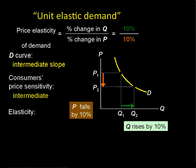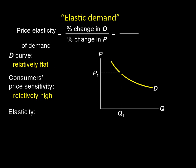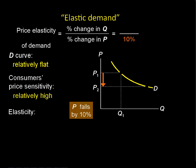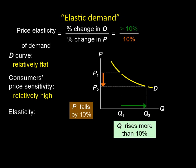Next is unitary elastic demand: price goes down by 10% and we get a 10% rise in quantity. When these two are equal you get one, so it's unitary elastic. This is important to think about — if price goes up, we see an equal percentage fall in quantity; if we decrease price, we see an equal percentage increase in quantity sold.